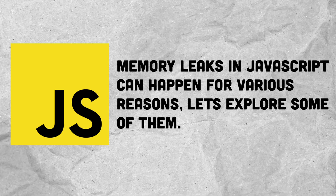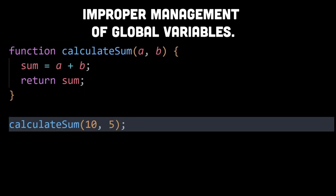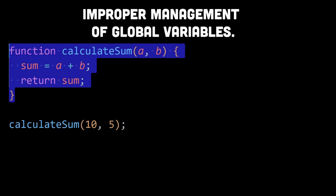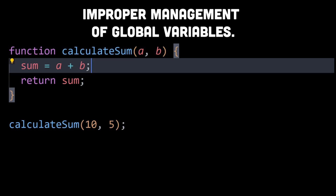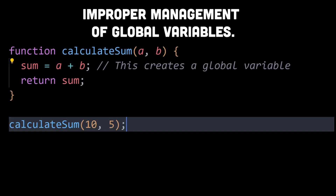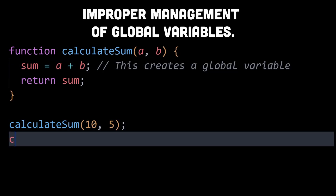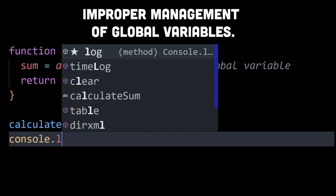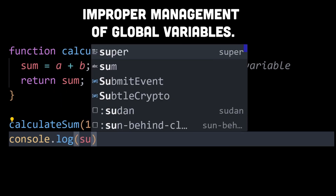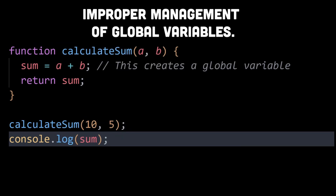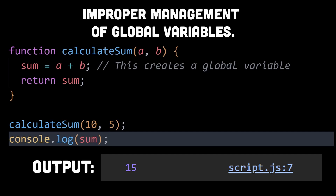Number one is improper management of global variables. In this example, you can see that sum is not declared with var, let, or const, and is directly assigned to a + b. When a variable is not declared and assigned like that, it automatically becomes a global variable. Such variables reside in the global scope and unless explicitly deleted, they persist for the lifetime of the application.